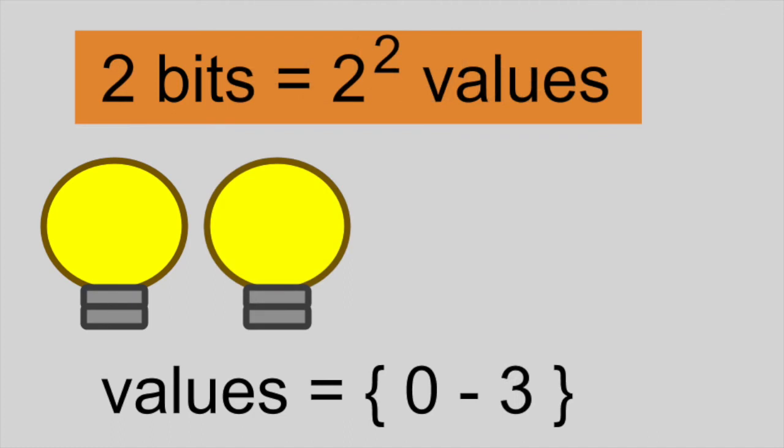With 2 bits, we can represent 4 different values, namely 0 through 3.